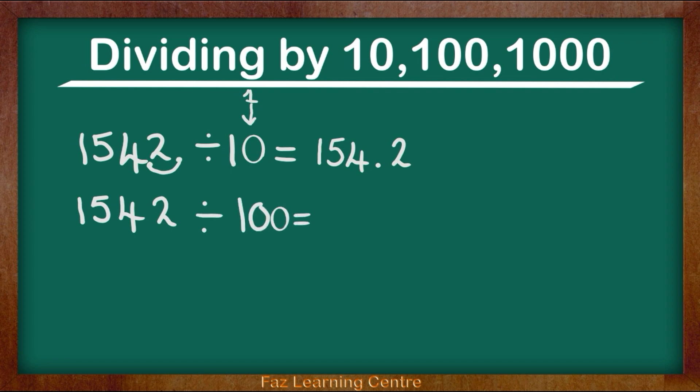So again, what are we doing? We are making the number 1542 one hundred times smaller. We don't have a decimal point but we know we can bring in a decimal on a whole number. So we don't have a decimal at the moment. I am going to bring in a decimal point.